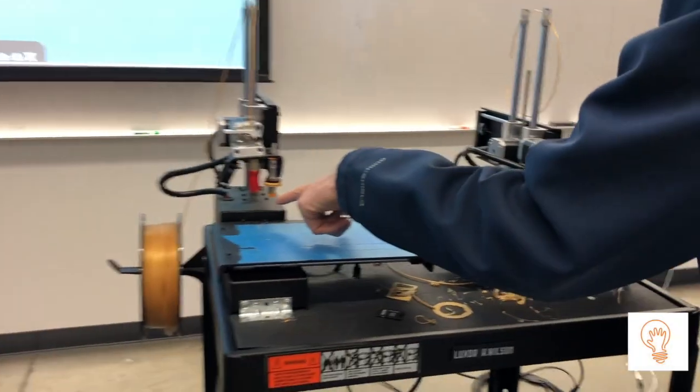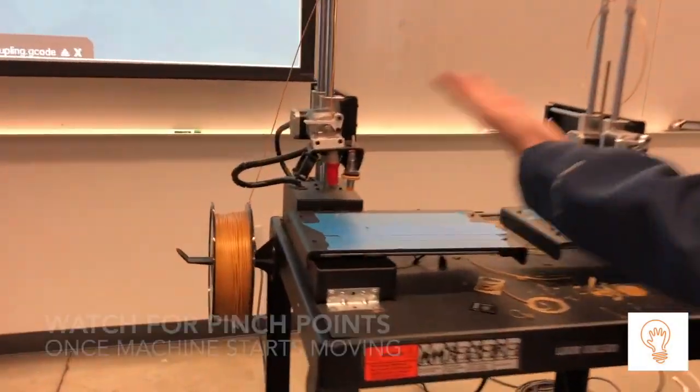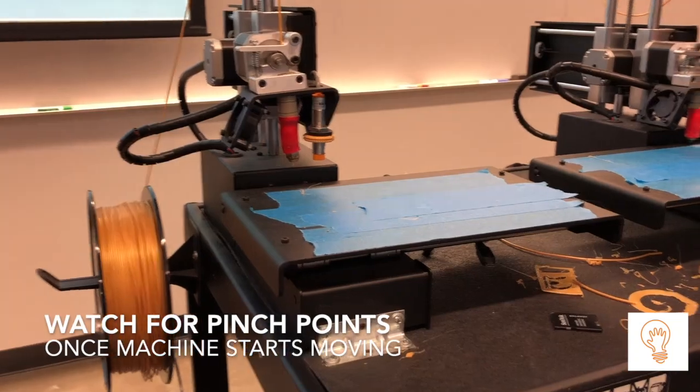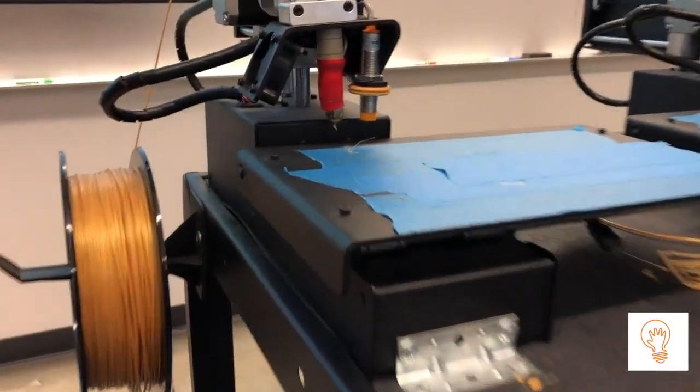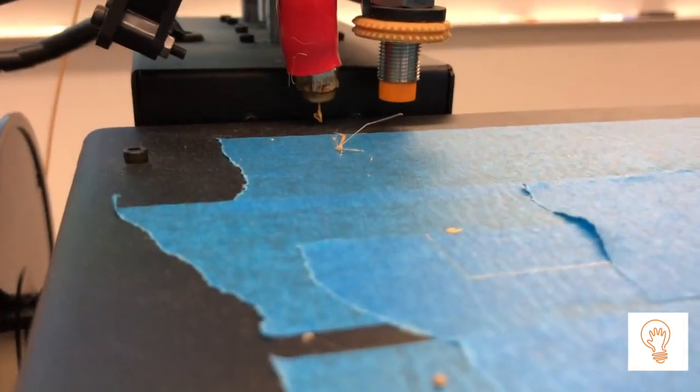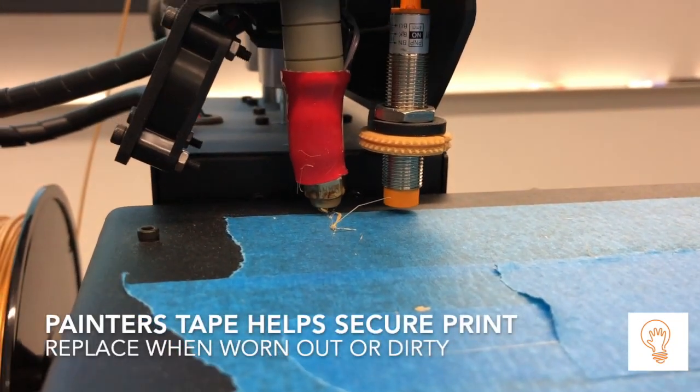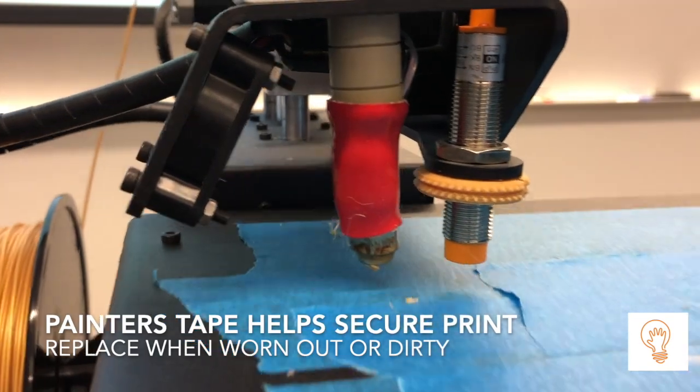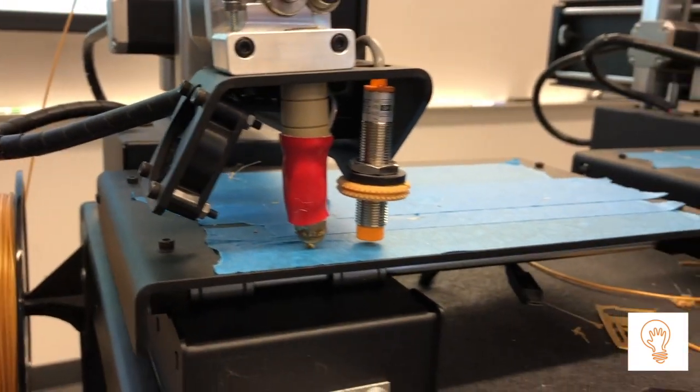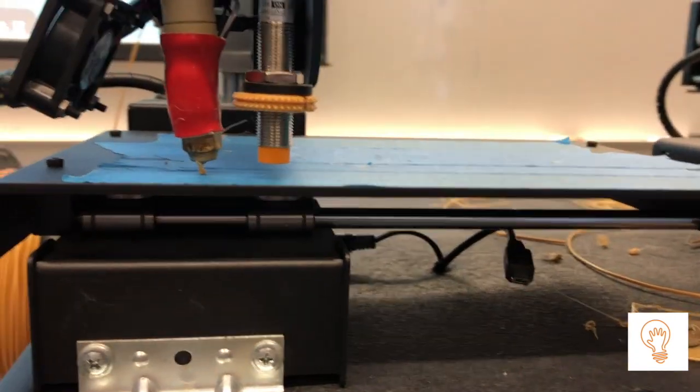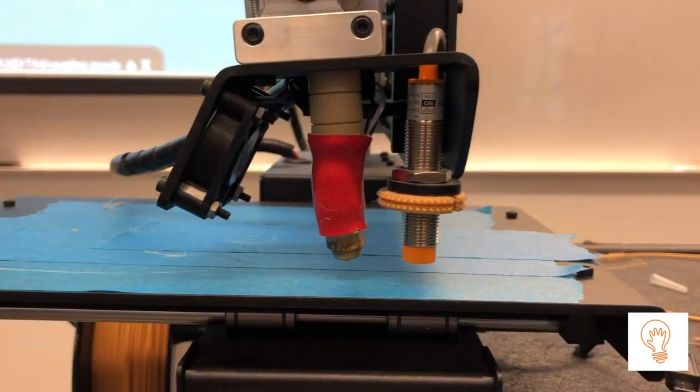If you see it digging into the platform or doing something that doesn't sound right, flag down the teacher or teaching assistant and we'll help get that fixed. We're getting very close. This thing should start moving shortly. There it goes, you can see it moving around.